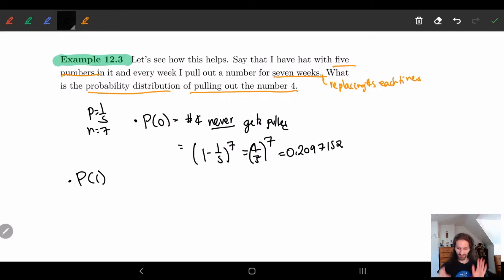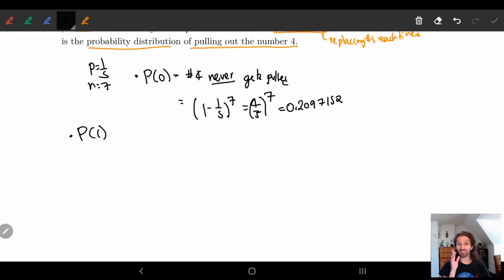Sometimes I like double question my own examples. I'm like, wait, is this right? But it's good to always double check your work, right? Even me, like I always double check my work constantly. So P of one, this is the number, this is asking the number four appearing exactly once.